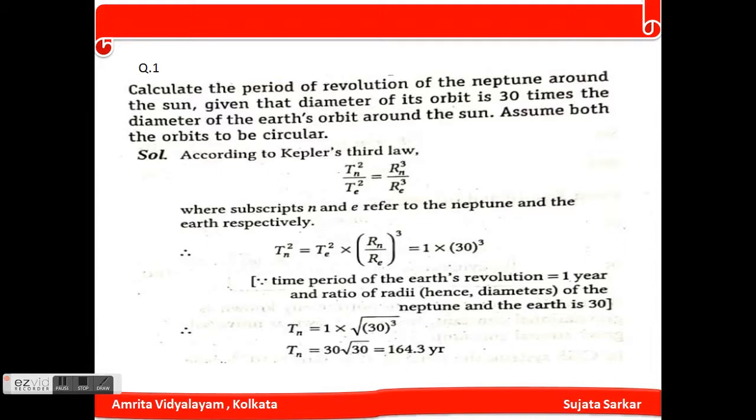So T_n squared equals T_e squared times (R_n/R_e) whole cubed, equals 1 times 30 cubed. T_n equals the square root of 30 cubed, which is equivalent to 30 root 30, which equals 164.3 years.